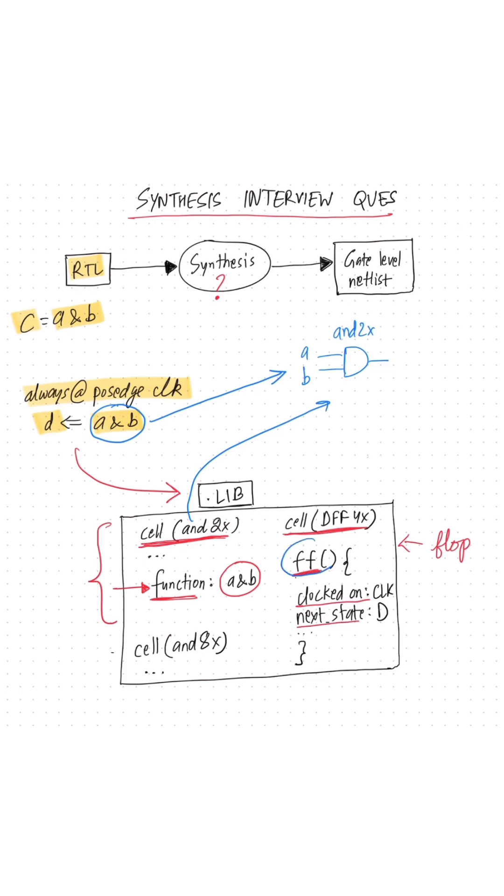Based on this syntax, the synthesis tool knows that this cell is a flop and it can be used to map this RTL description into logic gates.